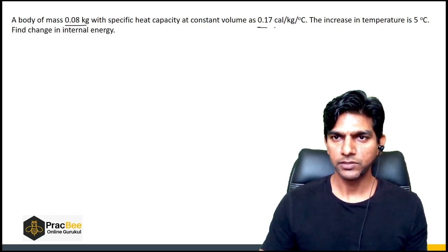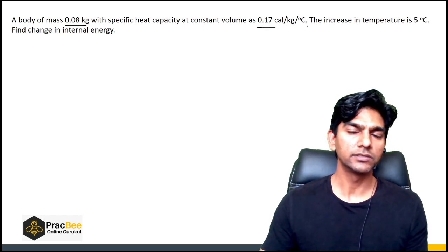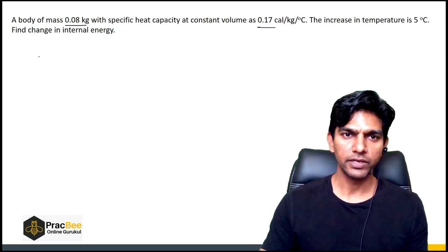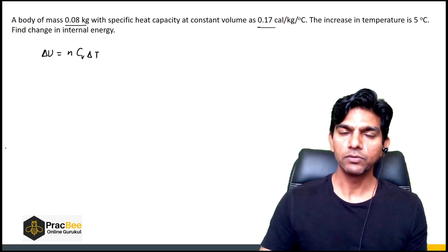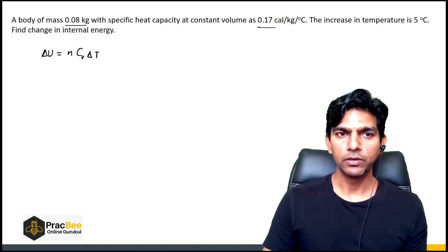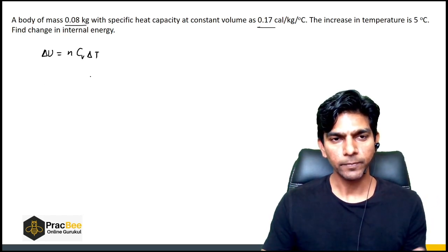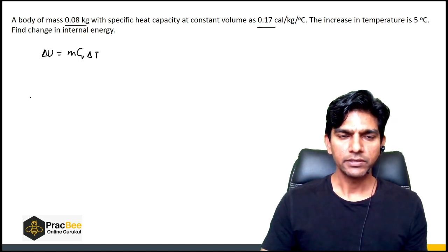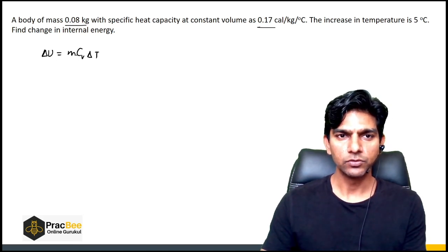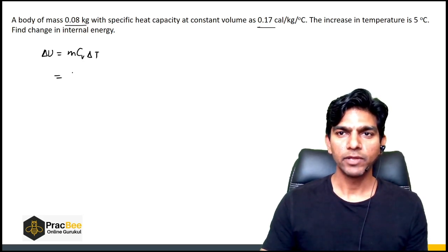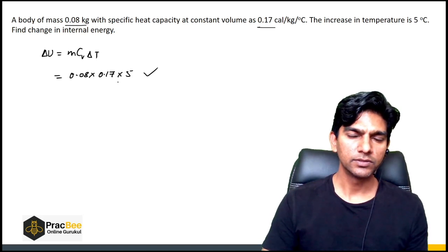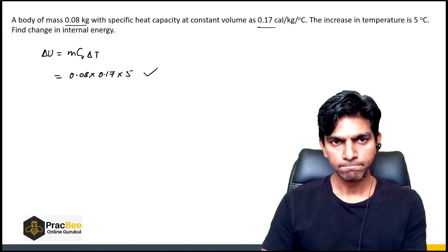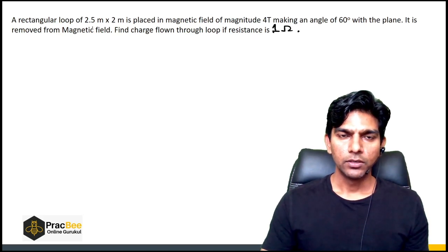Next: a body of mass 0.08 kg has specific heat capacity at constant volume of 0.17 cal/kg/°C, and its temperature increases by 5°C. Find the change in internal energy. Since it is a solid body, no work is done, so all heat goes into internal energy: ΔU = m·c_v·ΔT = 0.08 × 0.17 × 5. Simplifying gives the answer.